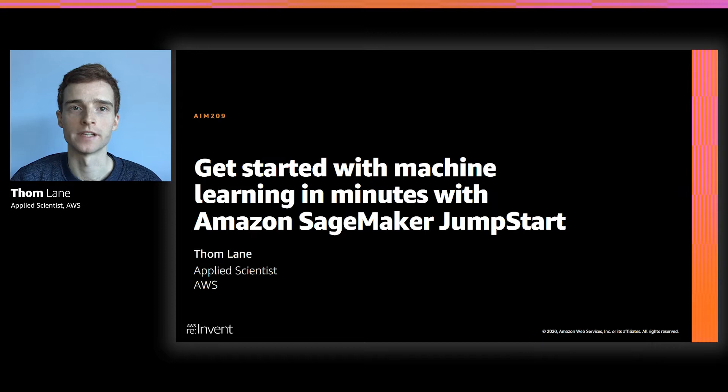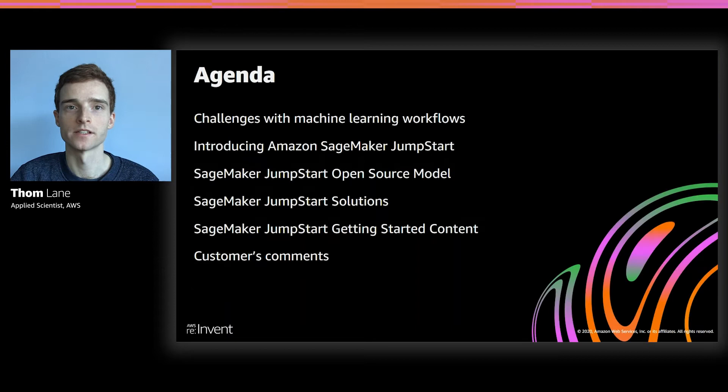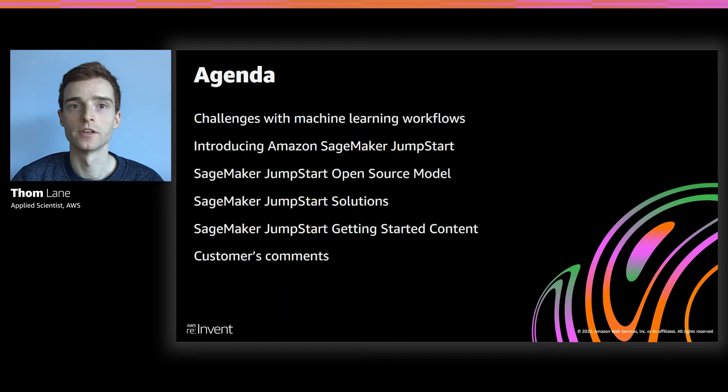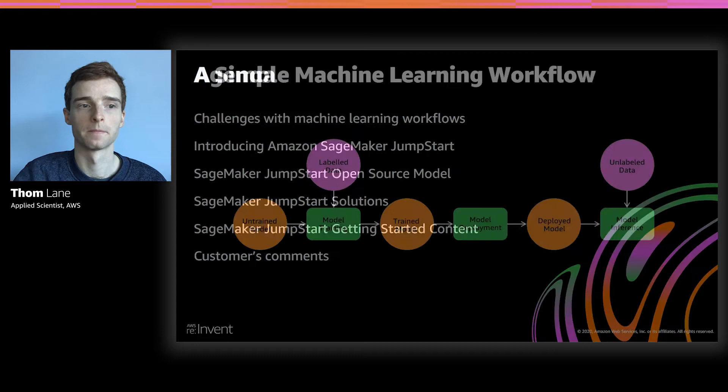Hello, my name is Tom Lane, and I'm here to talk to you about a new SageMaker feature that will help you get started with machine learning in minutes. We're going to start off by taking a look at some of the challenges of typical machine learning workflows, and then jump into some of the details around Amazon SageMaker Jumpstart. We're going to look at the open source models, solutions, and getting started content before wrapping up with some customer comments.